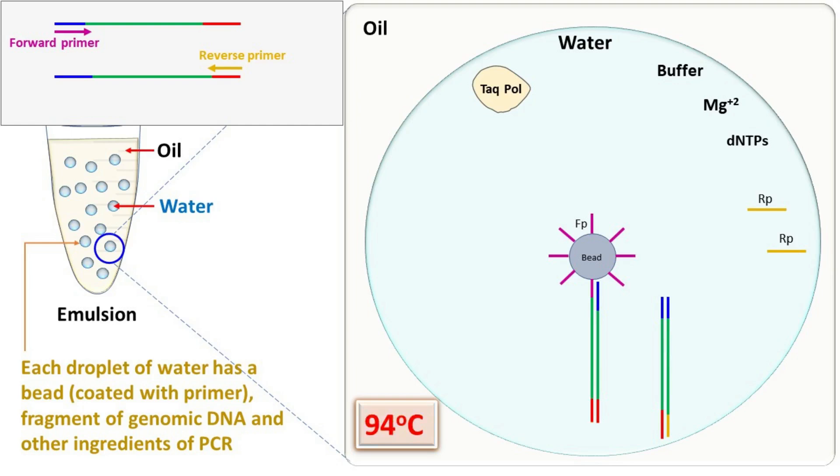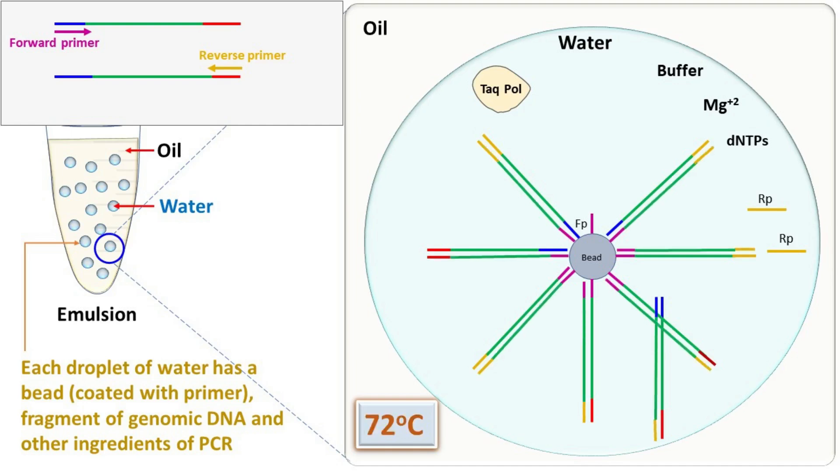As the PCR cycle continues, the fragments keep on getting amplified on the bead. This bead attached with the amplified fragment is then used for sequencing.